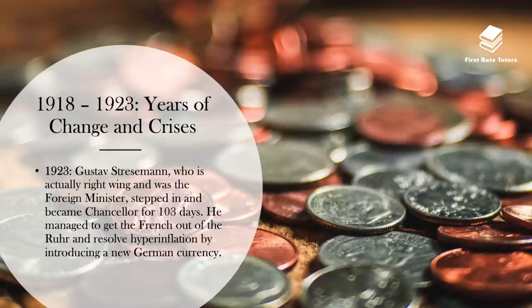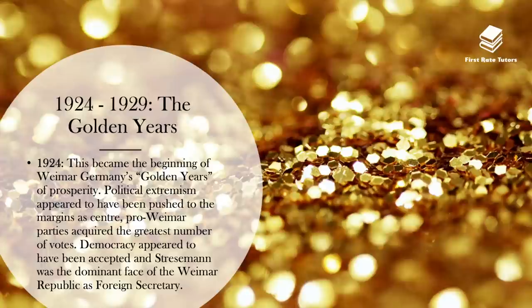However, there was a turnaround within 1923 as well, after all of this happened. Gustav Stresemann, who was actually a right-wing politician and the foreign minister, did step in to turn Germany's problems around, and he became Chancellor for 103 days. He managed to get the French out of the Ruhr and resolved hyperinflation by introducing a new German currency, which was called the Rentenmark. This led to the beginning of Weimar Germany's golden years, which started technically in 1924 all the way through to 1929.